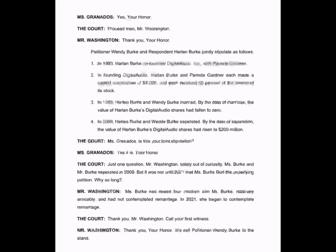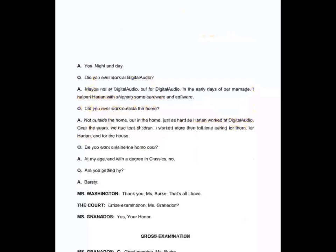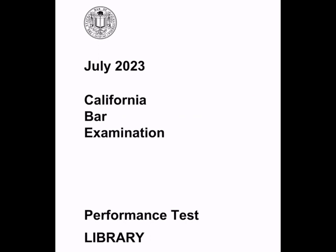I now see four numbered points — this is a stipulation from both sides. The first two points give me the date of founding of the company and the date they issued the stock. The third point says that after that, Harlan and Wendy married. The fourth point says that in 2009, when they filed for divorce, the stock had increased in value to $200 million from a starting value of zero. That's the context for me reading the law, and I see nothing else highlighted in the rest of this transcript, so I'm moving on to the library.